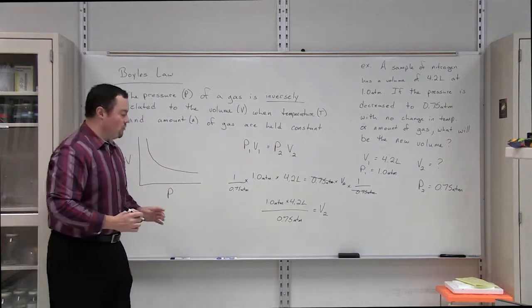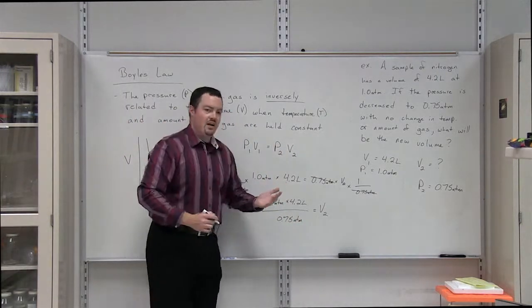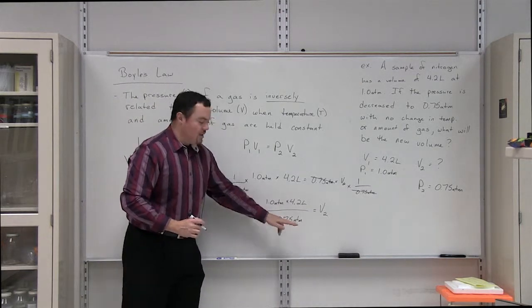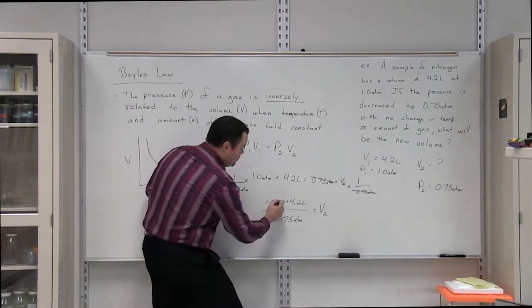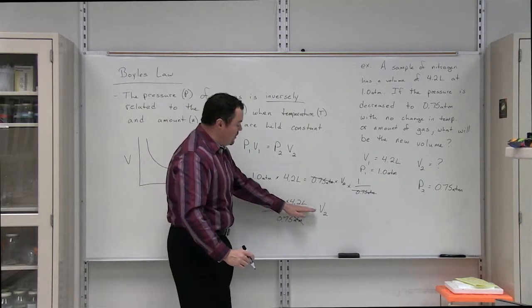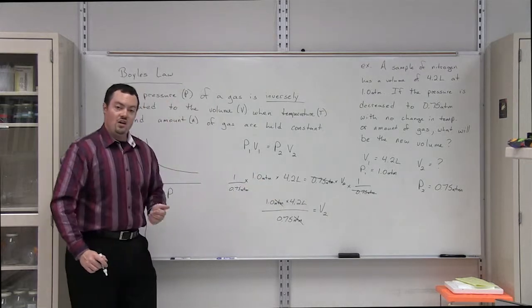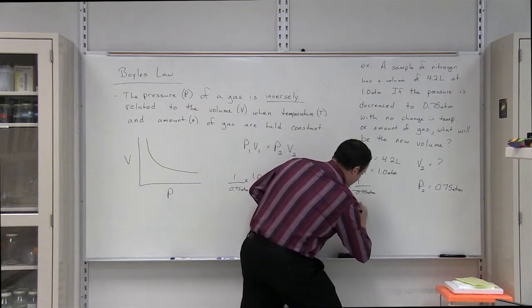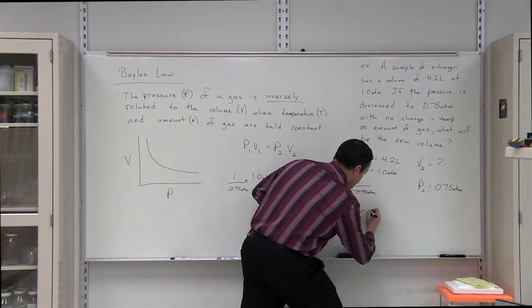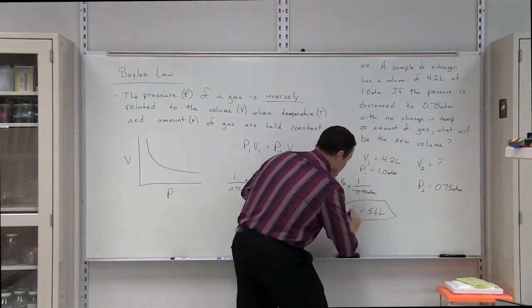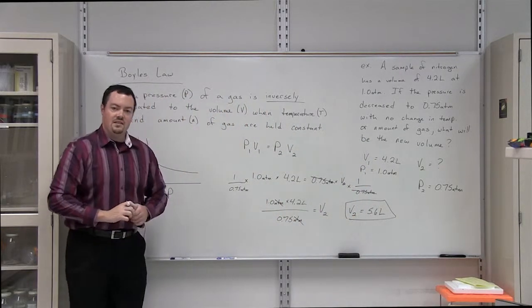Now, let's make sure our units cancel out correctly to ensure that we've set up the problem correctly. Here we have atmospheres in the numerator, atmospheres in the denominator. Those will cancel out. The only unit that we're left with is liters. We're solving for volume, which is measured in liters. When this is solved, we find that V2 equals 5.6 liters.